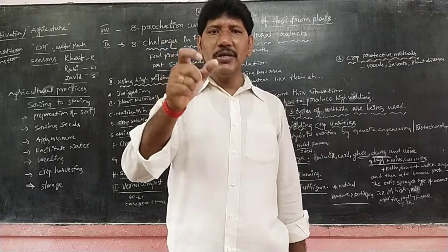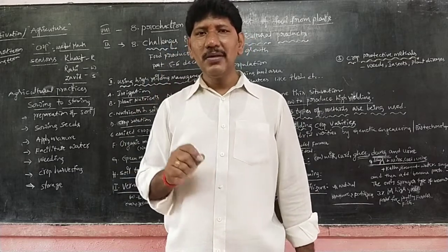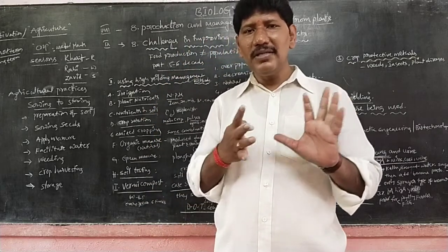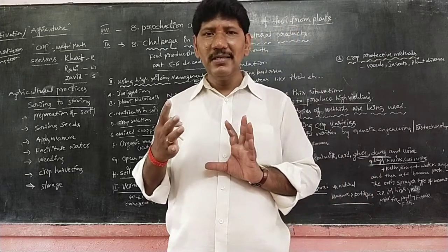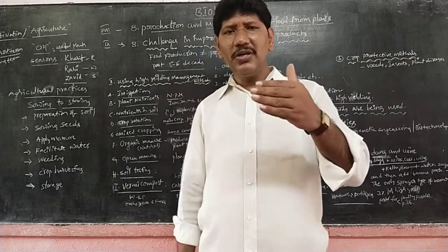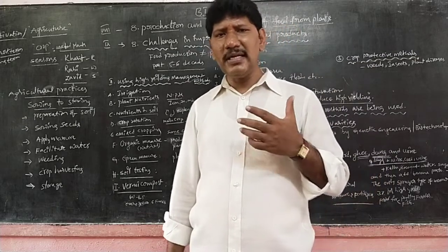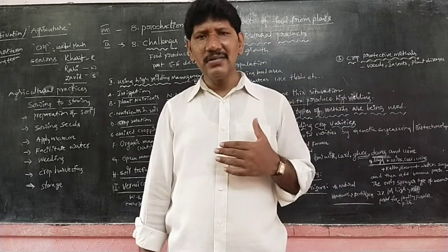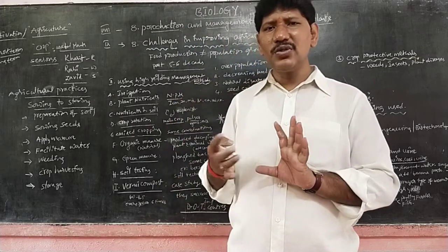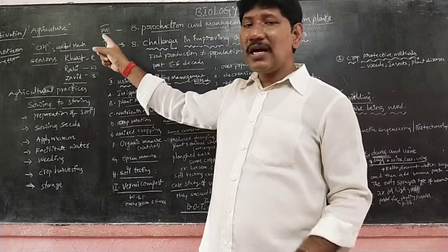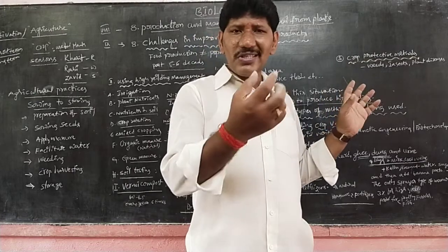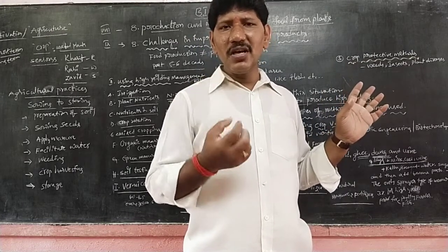Before coming to this topic, we need to link it to the eighth class, eighth chapter: production and management of food from plants. Biology is a branch of life sciences studying plants and animals. We study different branches like cytology, histology, sense organs, taxonomy, pathology, and animal behavior. One important part of biology is agriculture — the cultivation of plants.